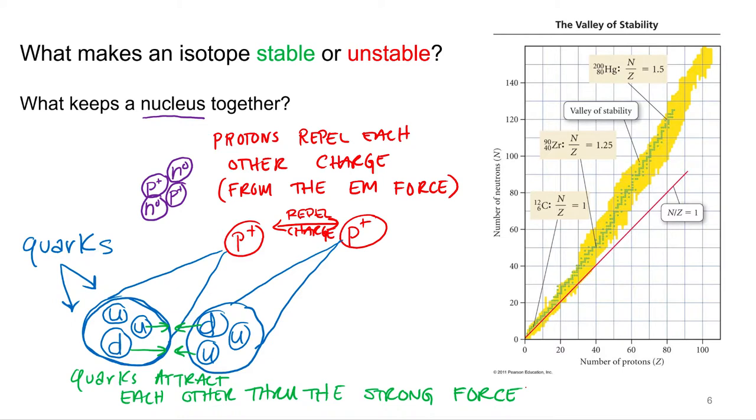And then whether or not an isotope is stable or unstable, it's just which one's stronger? Is the strong force, the attractive force, stronger? I'm going to be stable. If the repulsion force through electromagnetic force is stronger, I'm going to be unstable. Eventually the nucleus is going to break down, it's going to decay, it's going to have a fission reaction.